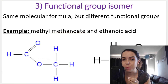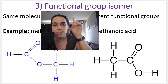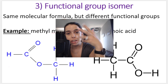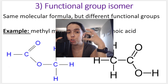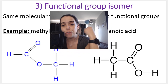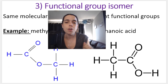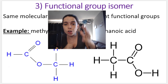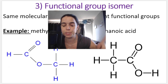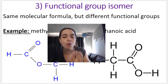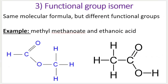The third type of structural isomer that people struggle with is called the functional group isomer. A functional group is the bond, atom, or group of atoms that determines the physical or chemical properties of a group of organic compounds. Different homologous series have different functional groups — alcohols, carboxylic acids, ketones each have their own functional groups. Functional group isomers have the same molecular formula but different functional groups, which means they belong to completely different homologous series.